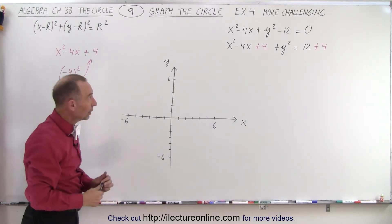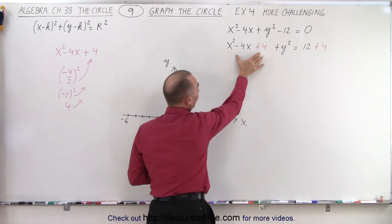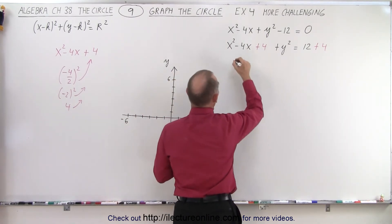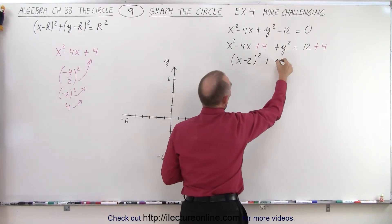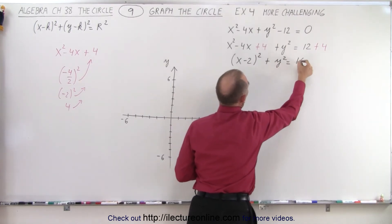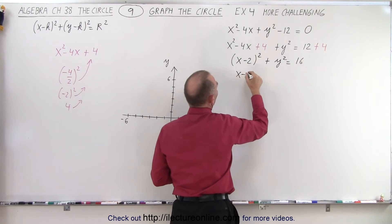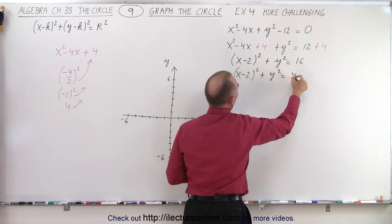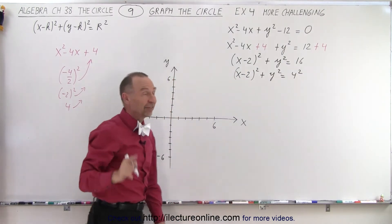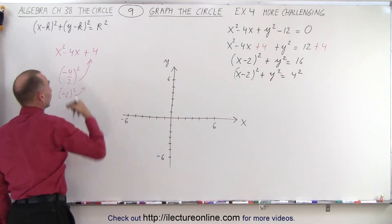So now that we've done that, we can go ahead and write this as a binomial squared. So this can now be written as a quantity x minus 2 squared plus y squared is equal to 16, or x minus 2 squared plus y squared is equal to 4 squared. And now it's in the exact format of the general formula.